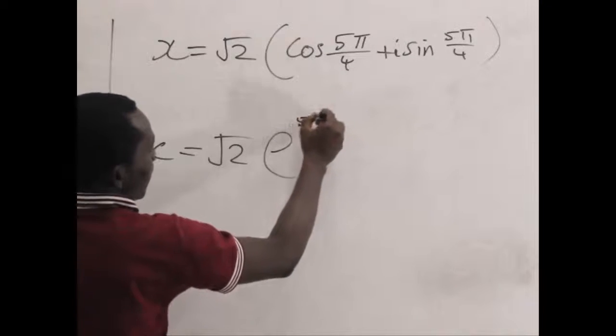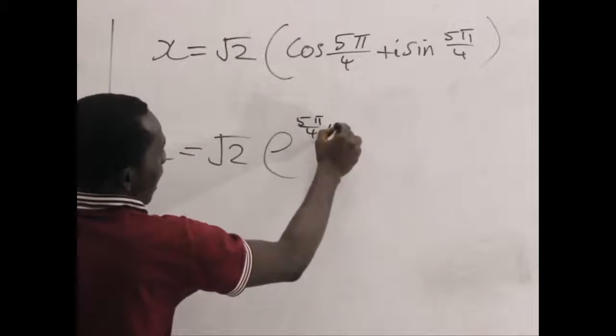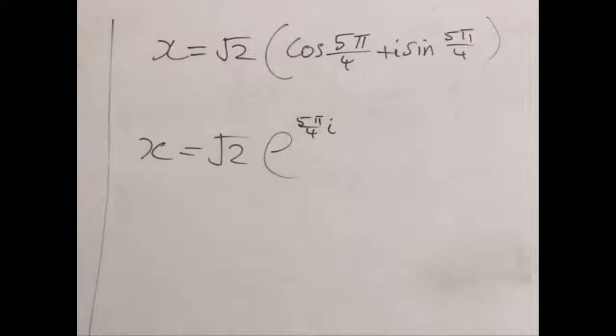So that's the polar form. So that's the upper part is the polar form and the lower part is the angular form.